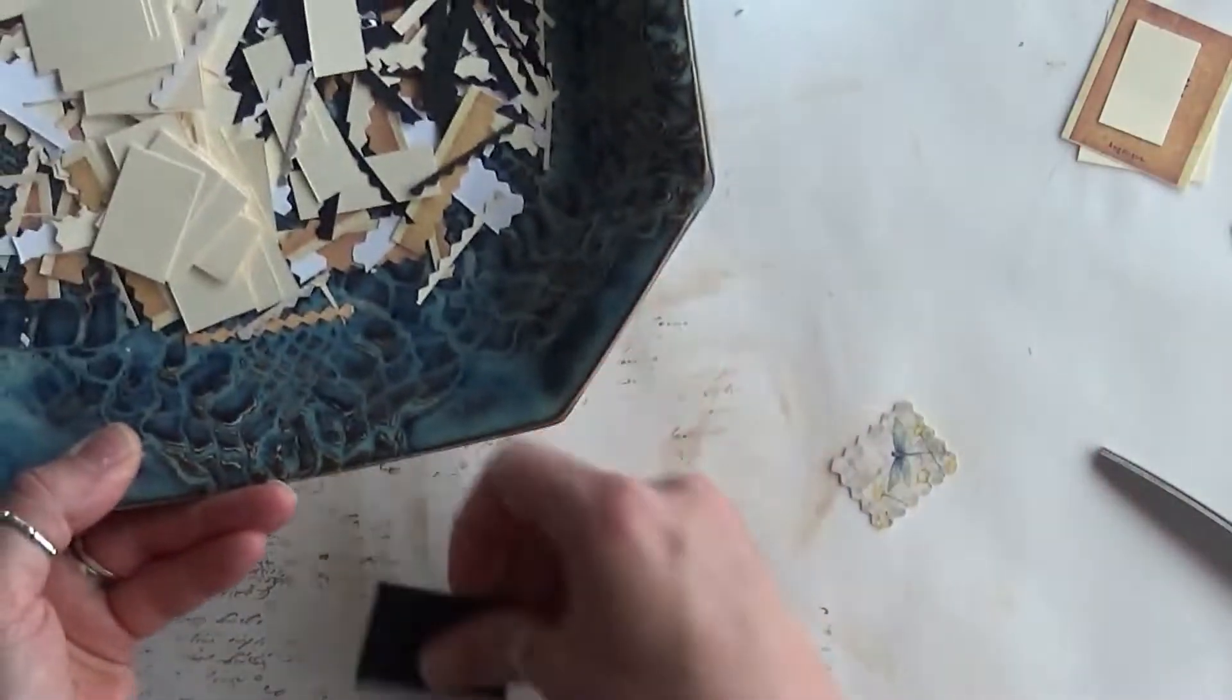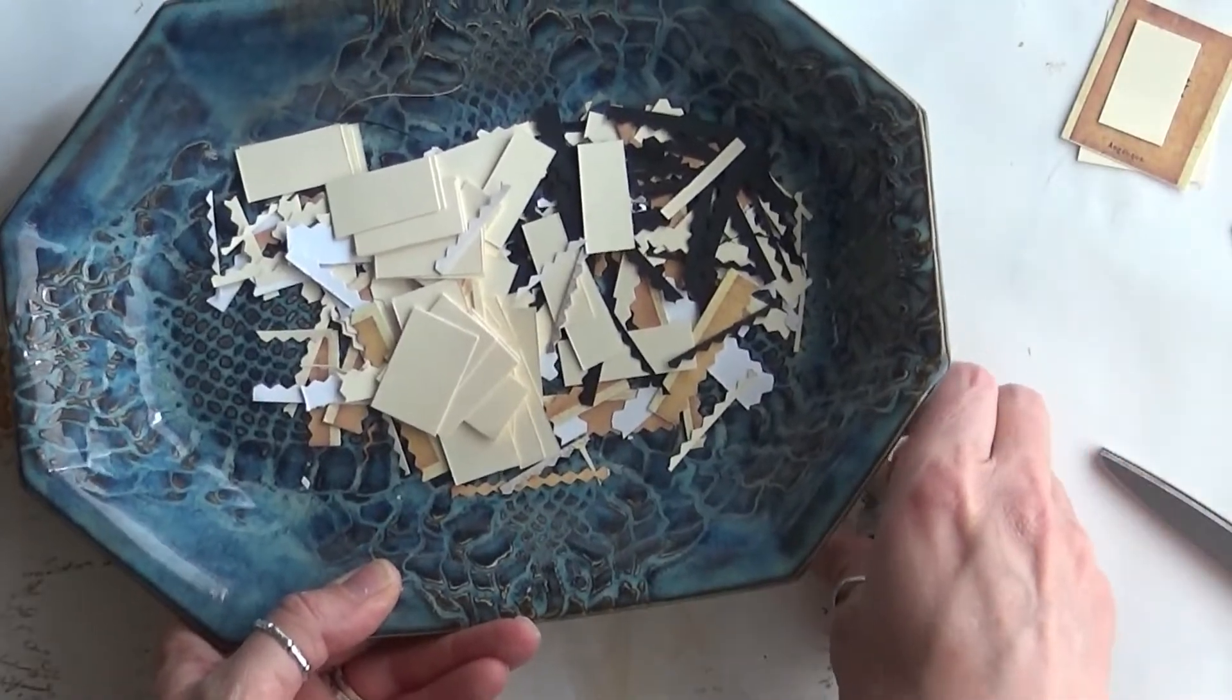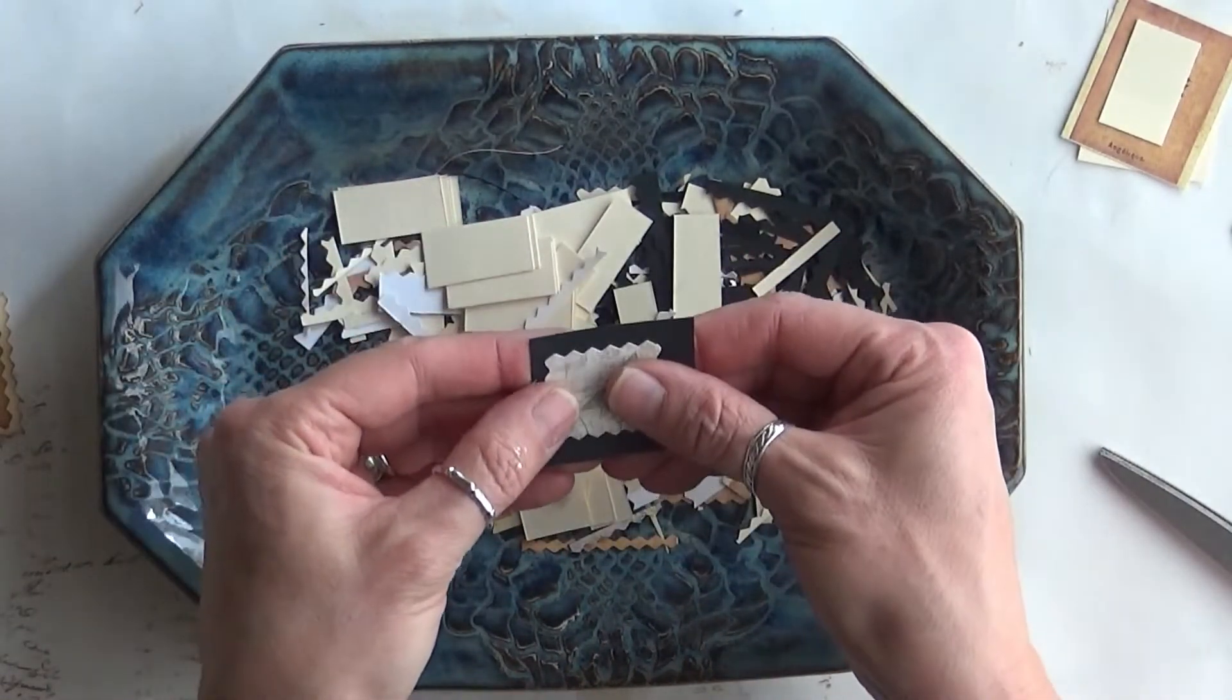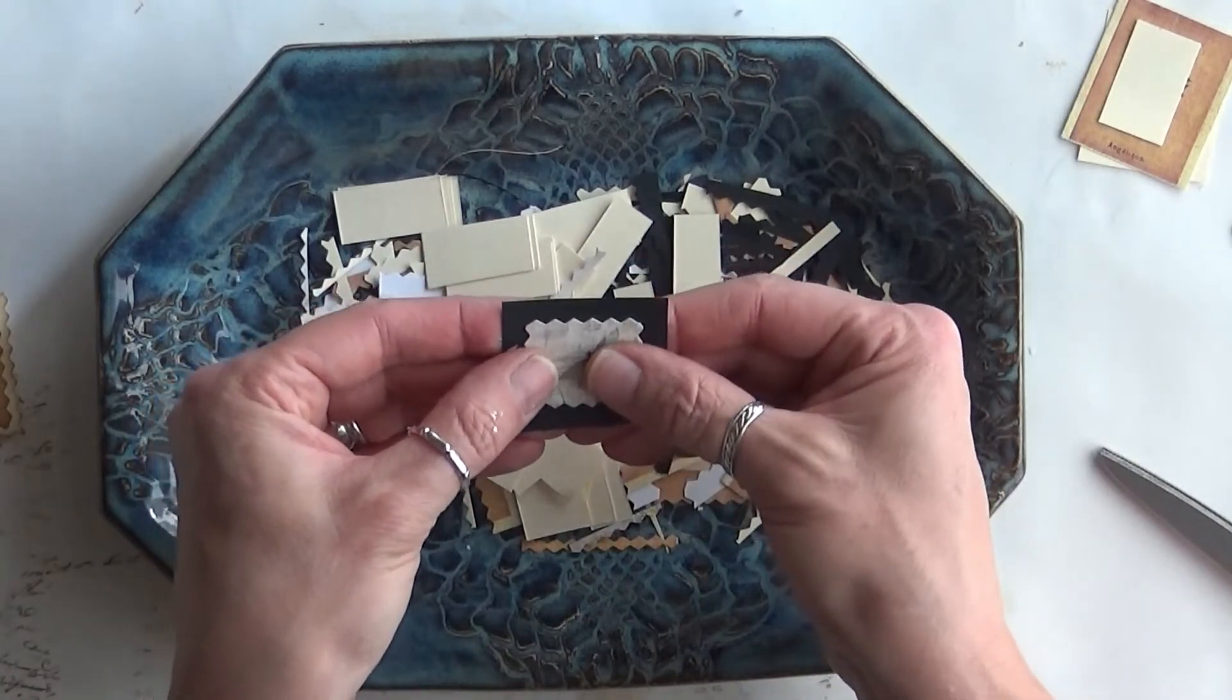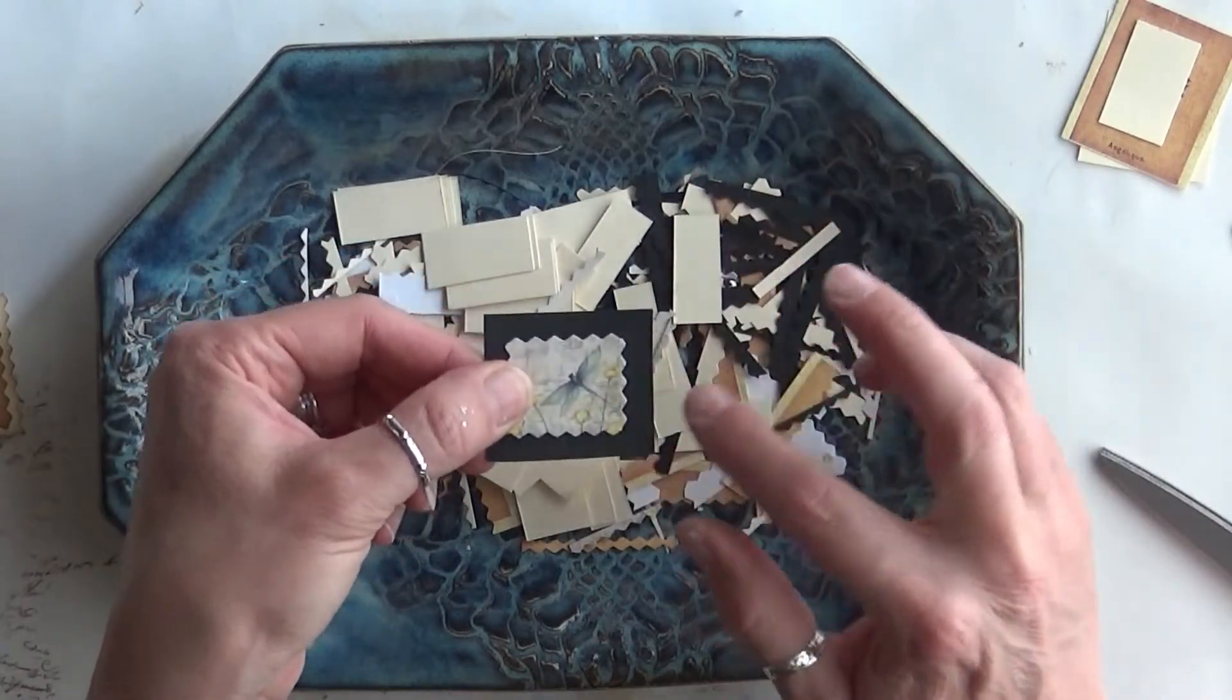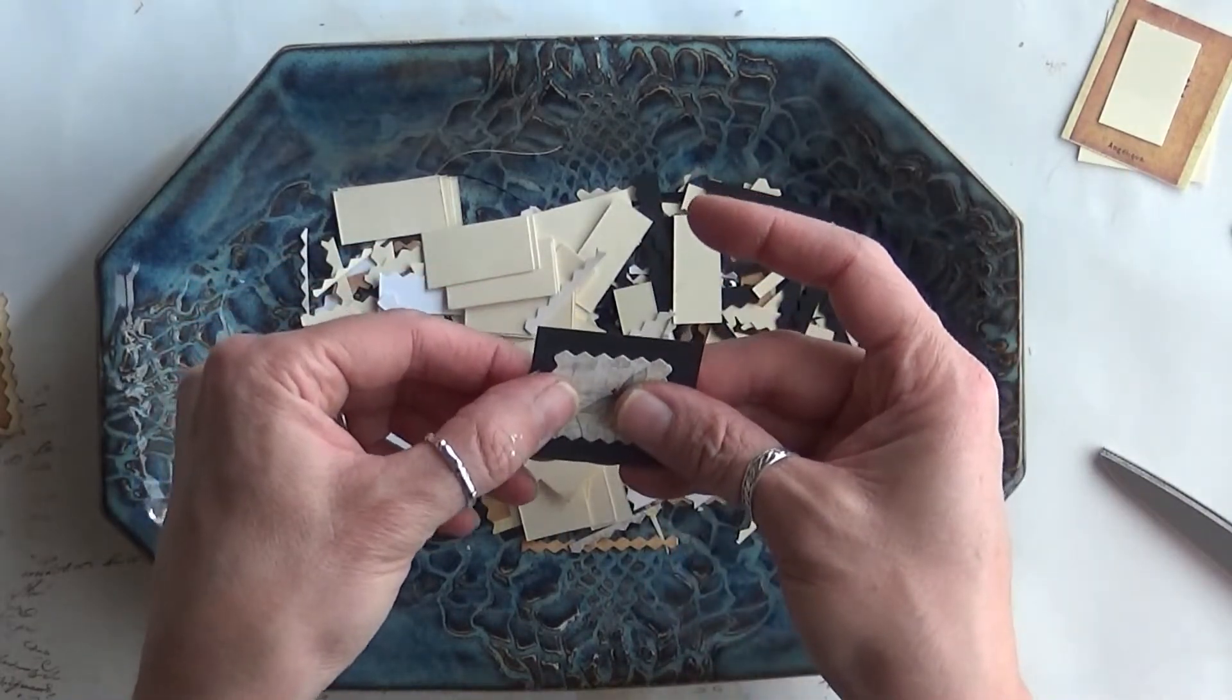Then I take this piece and put it on top of the black paper. You want to cut a big enough piece of your backing paper to have a nice border.